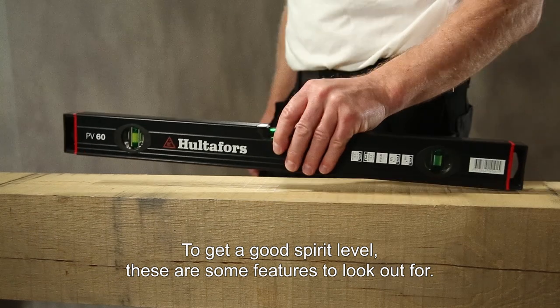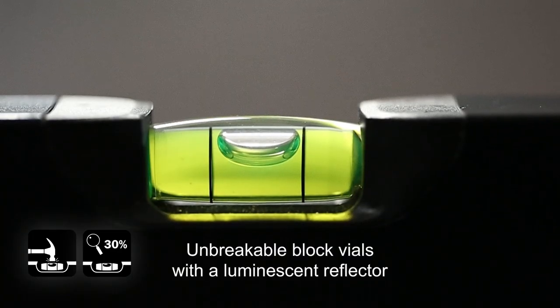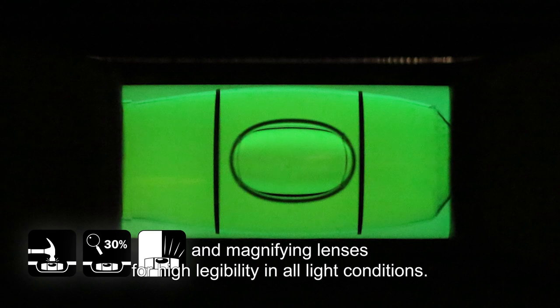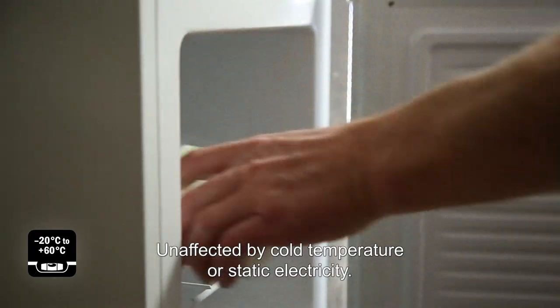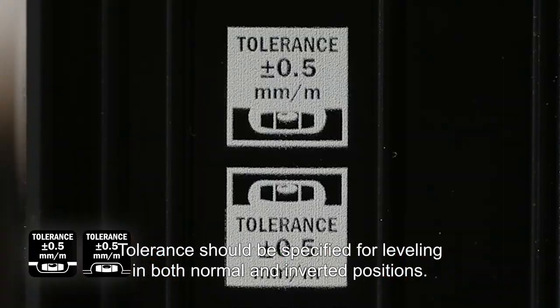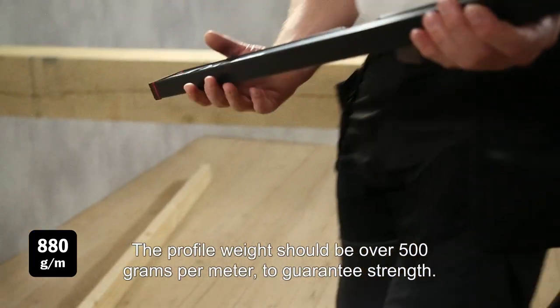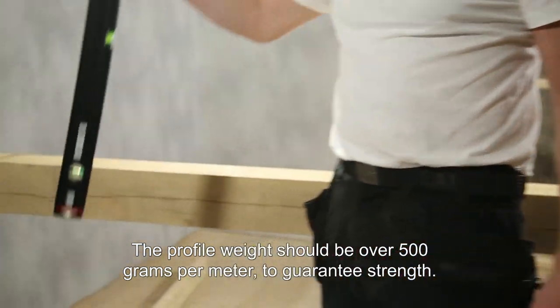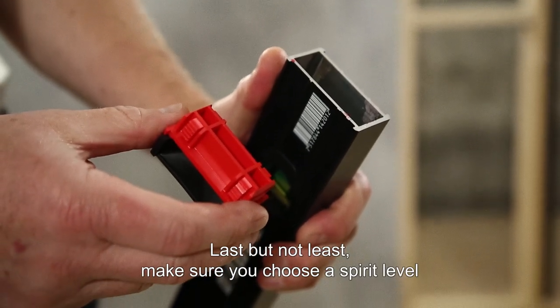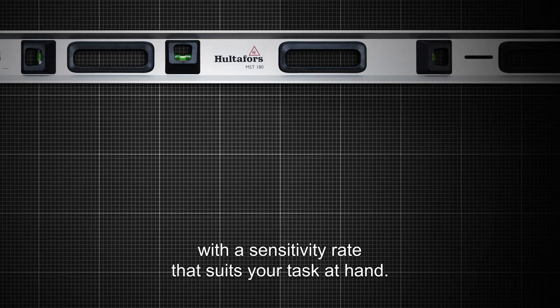To get a good spirit level, these are some features to look out for: unbreakable block vials with a luminescent reflector and magnifying lenses for high legibility in all light conditions, unaffected by cold temperature or static electricity. Tolerance should be specified for leveling in both normal and inverted positions. The profile weight should be over 500 grams per meter to guarantee strength and look out for rubber end caps that will protect it. Last but not least, make sure you choose a spirit level with a sensitivity rate that suits your task at hand.